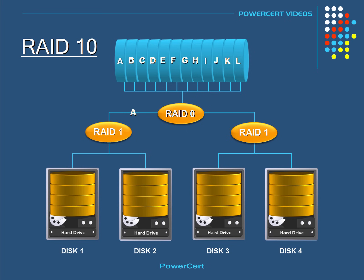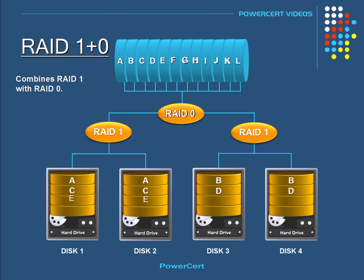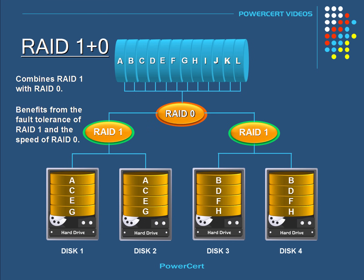And finally there is RAID 10. RAID 10 is basically what the name says — it's combining RAID 1 and RAID 0 together, and you need to use a minimum of four disks. In a RAID 10 setup, a set of two disks are mirrored using RAID 1. Then both sets of two disks are striped using RAID 0. So RAID 10 benefits from the fault tolerance of RAID 1 and the speed of RAID 0. But the downside is that you can only use 50% of the capacity for data storage, so if you are using four disks, you can only use two of them for actual storage.